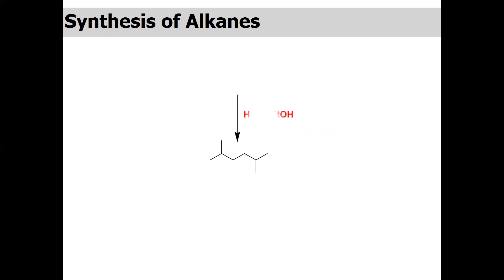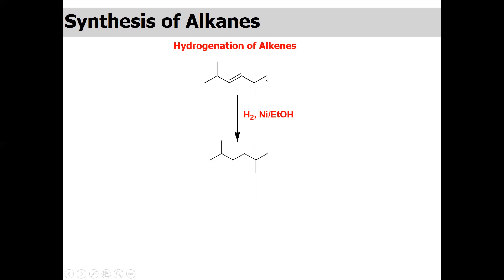For reagent one — hydrogen in the presence of nickel as a catalyst — the starting compound could be an unsaturated alkene. The double bond can be positioned at various locations along the chain or in the branches. Hydrogen in the presence of this catalyst will hydrogenate the double bond and give the corresponding alkane. This reaction is known as hydrogenation of alkenes.